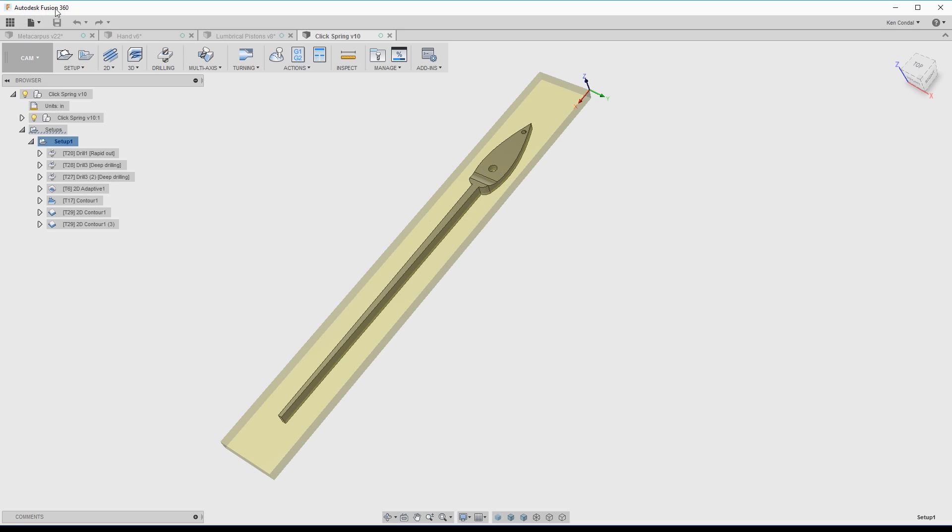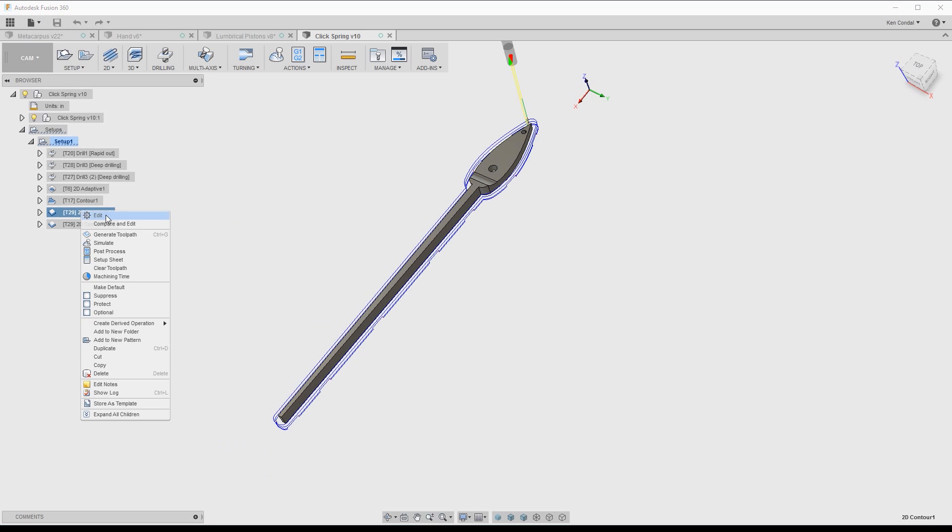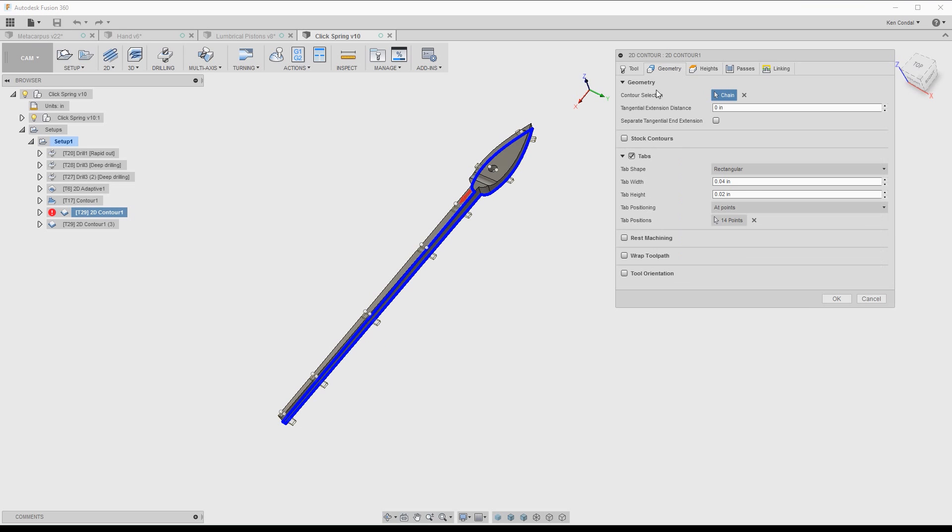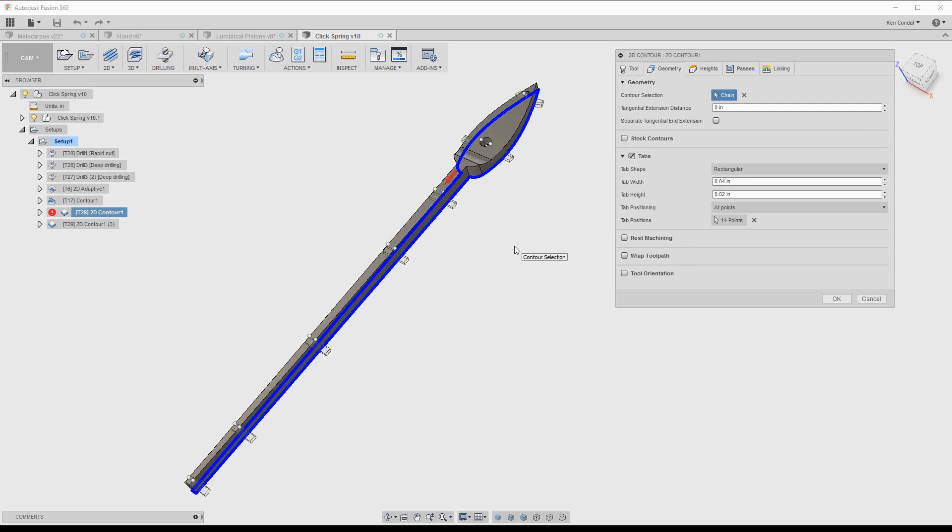But what Fusion 360 allows me to do is set up what they call tabs. They're just little pieces of stock that are left behind, so the part is still attached to the stock it's being cut from. You can specify where they're placed and how big they are and how tall they are through all these controls here.